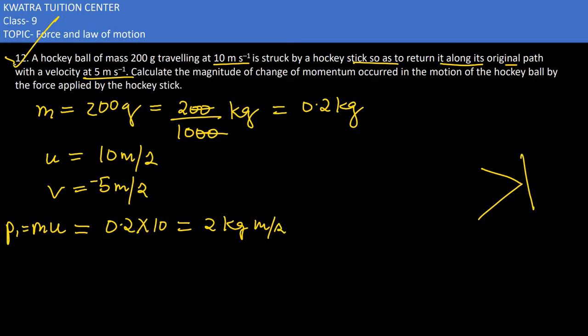And what would be p2, final momentum mv? So 0.2 into minus 5, you get minus 1 kg meter per second.